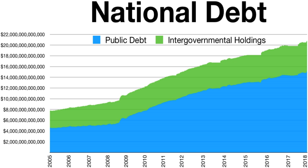The United States government has continuously had a fluctuating public debt since its formation in 1789, except for about a year during 1835–1836, when President Andrew Jackson completely paid the national debt. To allow comparisons over the years, public debt is often expressed as a ratio to gross domestic product (GDP). The U.S. public debt as a percentage of GDP reached its highest level during Harry Truman's first presidential term, during and after World War II. Public debt as a percentage of GDP fell rapidly in the post-World War II period, reaching a low in 1974 under Richard Nixon. Debt as a share of GDP has consistently increased since then, except during the presidencies of Jimmy Carter and Bill Clinton. Public debt rose sharply during the 1980s, as Ronald Reagan cut tax rates and increased military spending.